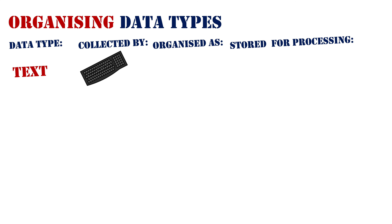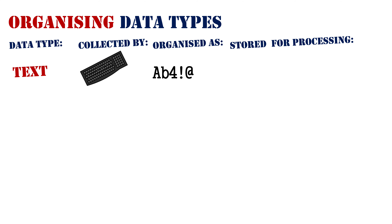When text is entered in the system, it is organized as symbols — capital A, small b, the number four, exclamation mark, at symbol. That's what text looks like when it goes into a system. It is stored for processing by being identified as a corresponding binary value — combinations of zeros and ones.